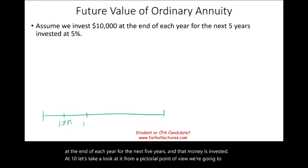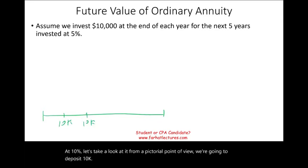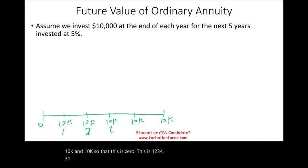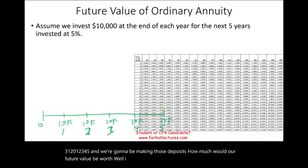We're going to deposit $10,000 each year at periods 0, 1, 2, 3, 4, and 5, making those deposits. How much would our future value be worth? Well, I can compute this. If you remember what we learned in the prior session on the future value of a single amount, let's start with the first payment of $10,000.